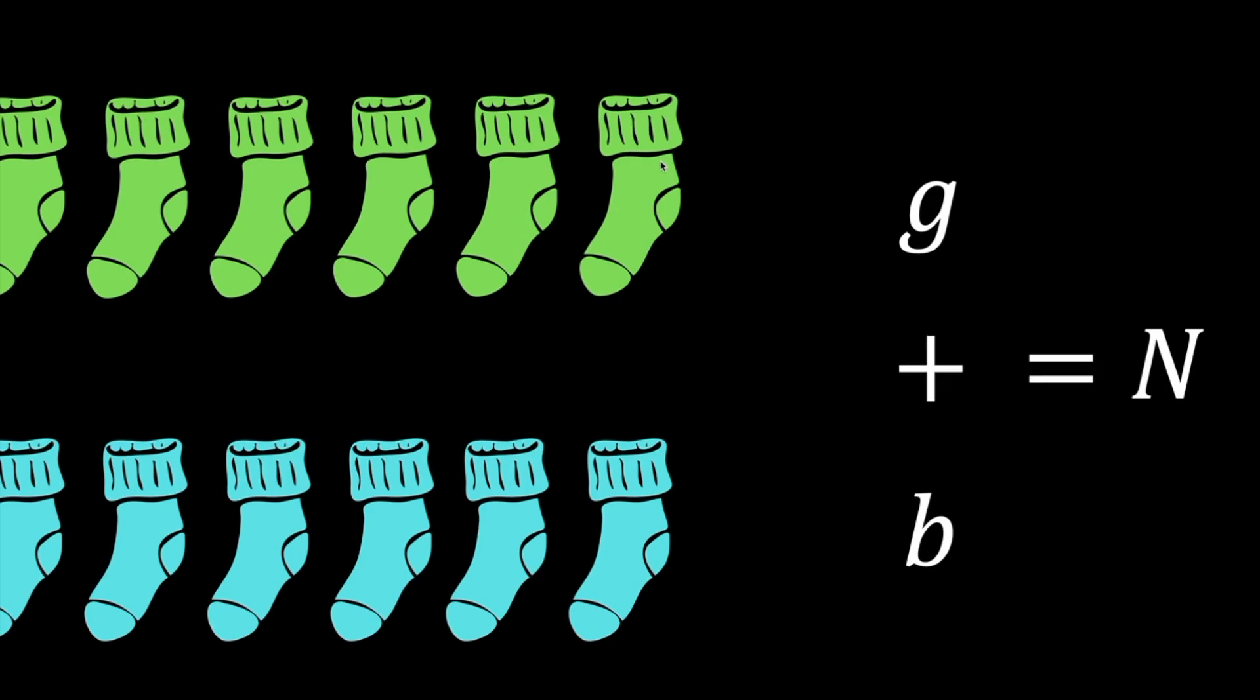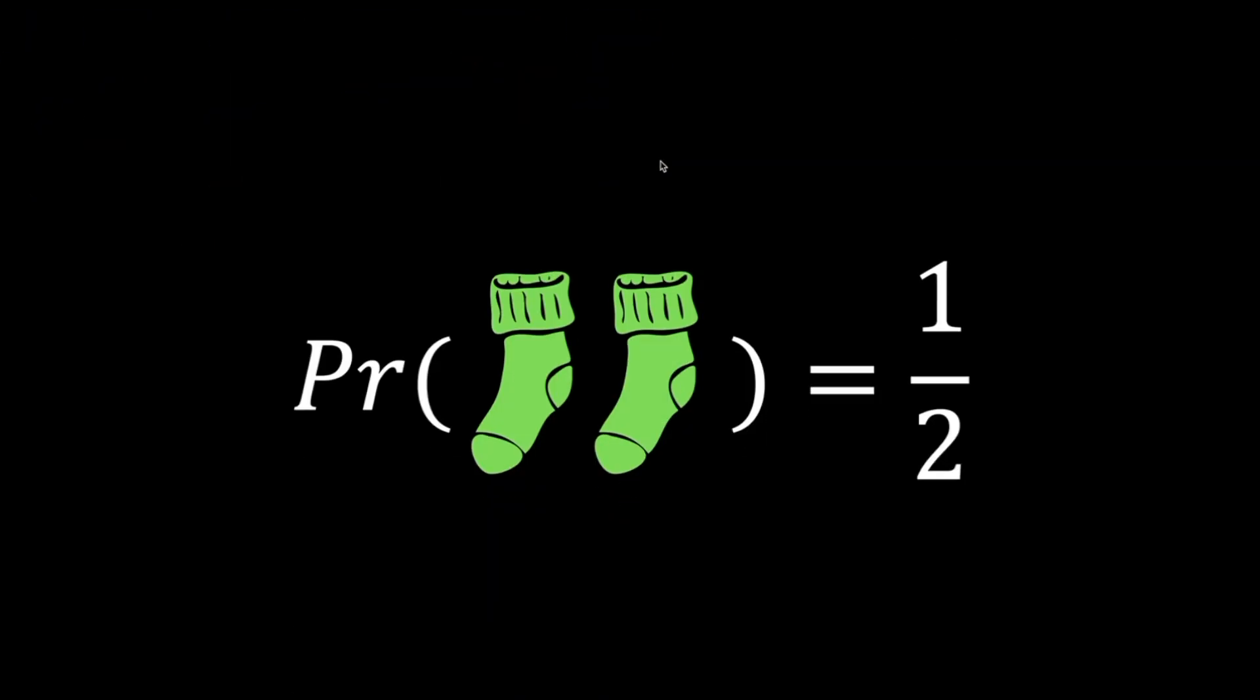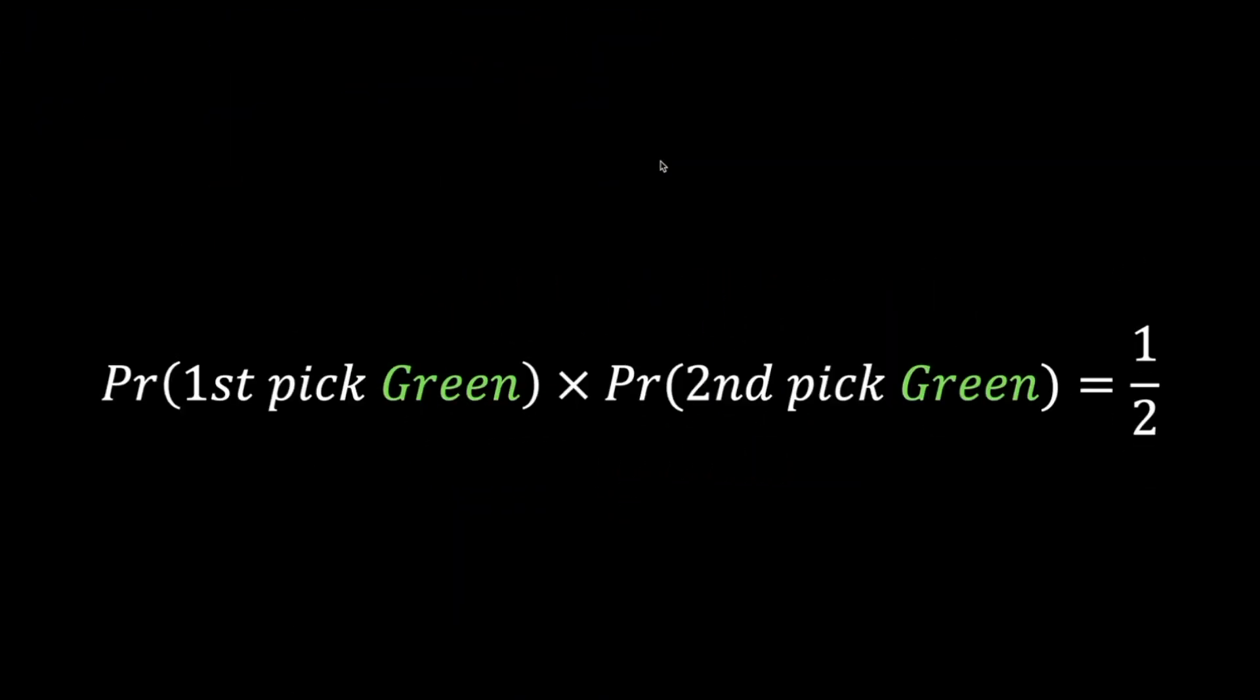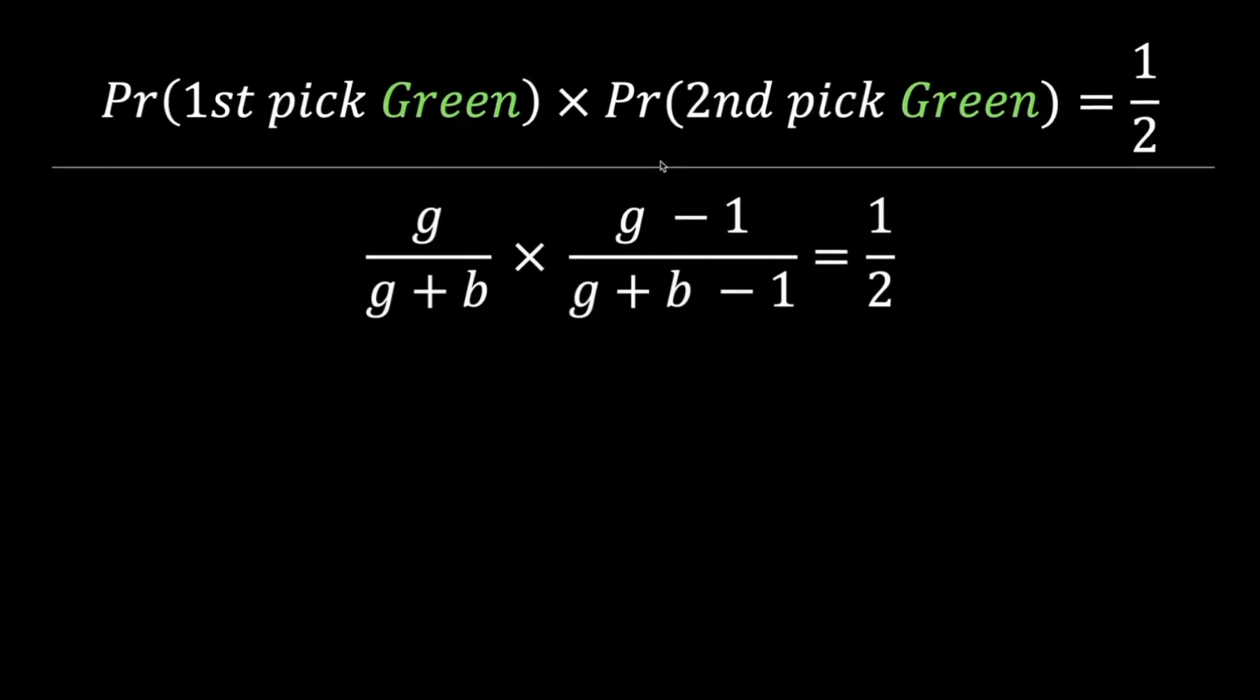So let the number of green and blue socks be g and b respectively, with g plus b equaling n. The probability of 1 over 2 is the probability of picking a green sock consecutively over two picks. Let's formulate the probabilities in terms of g and b. The second term has 1 less on the numerator and denominator since 1 green sock has been removed from the bag.